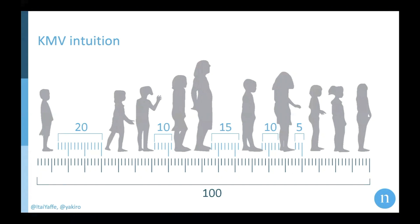We will not take all the distances — we will take only the minimal distances. With K equal to one, five is the minimal length, so this is the only distance we store. If we take 100 divided by five, we estimate 20 people standing in the line. But 20 is not such a great estimate, because there are actually 10 people in the line. So let's see if increasing K can improve our estimation.